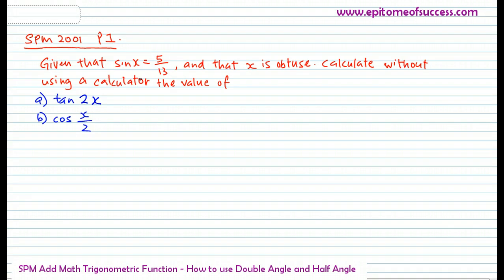Given that sin x is 5 over 13, and that x is obtuse, calculate without using a calculator the value of tangent 2x and cos x over 2.